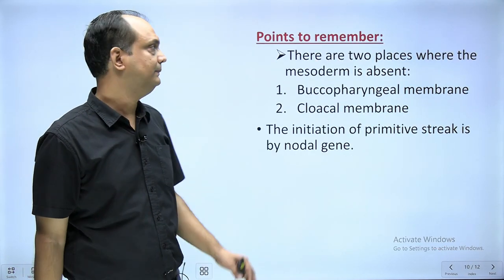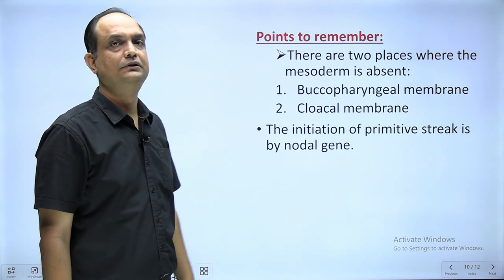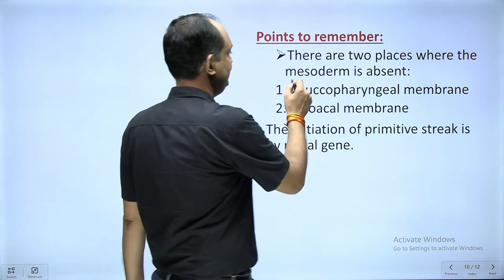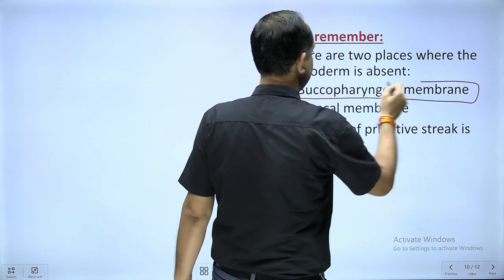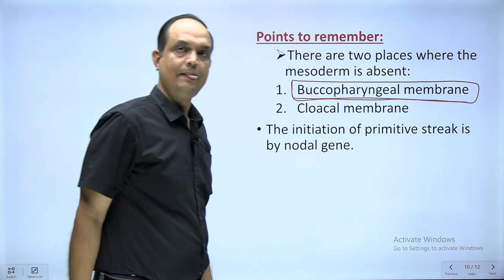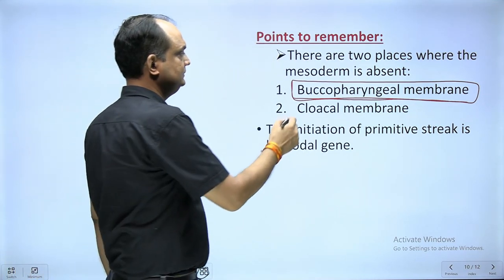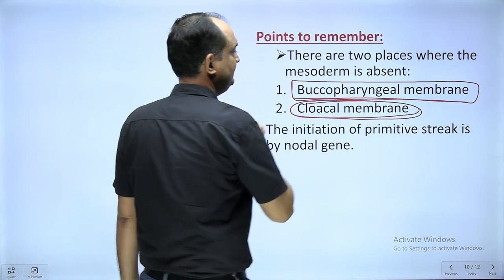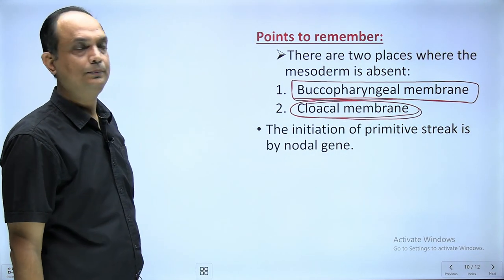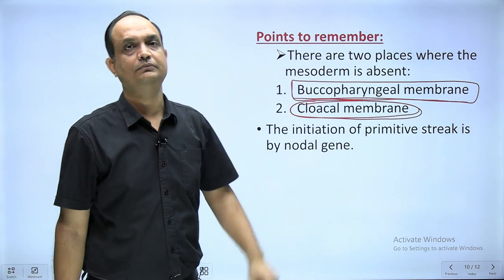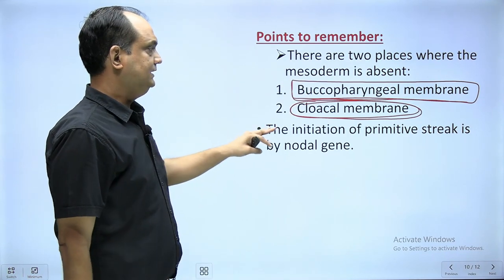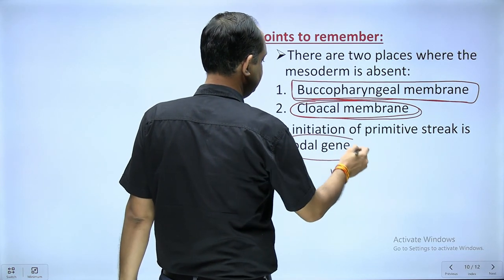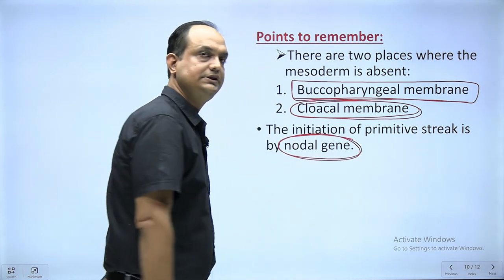There are two places where mesoderm is absent. One anteriorly is the pre-cordal plate area, the future mouth where you have the buccopharyngeal membrane. The second area where mesoderm is absent is the cloacal membrane, which is the future anal opening. The initiation of primitive streak is controlled by the nodal gene.